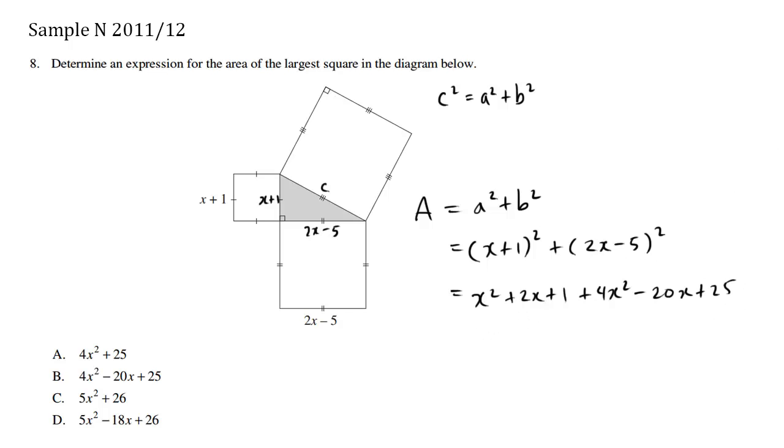We gather our like terms. So we have x squared and positive 4x squared. We have positive 2x and we have negative 20x. And then finally, we have the positive 1 and the positive 25.